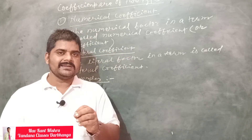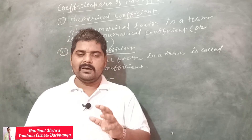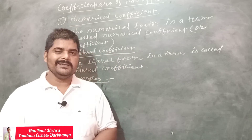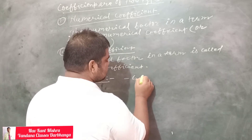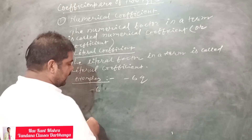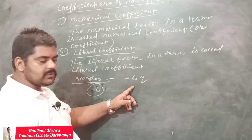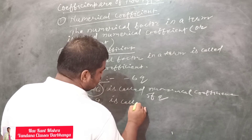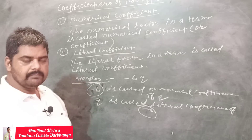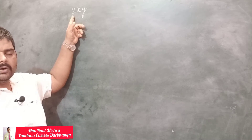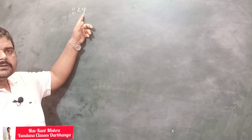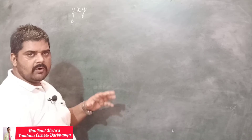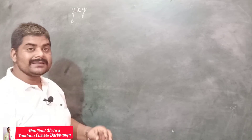Coefficients are of two types: numerical coefficient and literal coefficient. The numerical factor of a term is known as the numerical coefficient, and the literal factor of the term is known as the literal coefficient. For example, in minus 6q, minus 6 is the numerical factor, so minus 6 is the numerical coefficient of q, and q is the literal coefficient. In the term 2xy, 2 is the numerical coefficient of xy, and xy is the literal coefficient of 2.